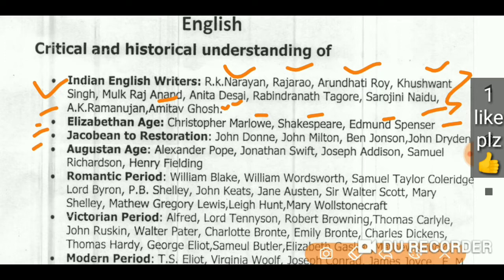For Jacobian Age to Restoration Age — John Donne, John Milton, Ben Johnson, and John Dryden — I have already covered that period. For the Augustan Age, in detail you can find on my channel about all these writers. You will find some works by Joseph Addison and Samuel Richardson — I have not covered Samuel Richardson yet — and some works by Henry Fielding. It will help you to remember the characters and summaries of the works.